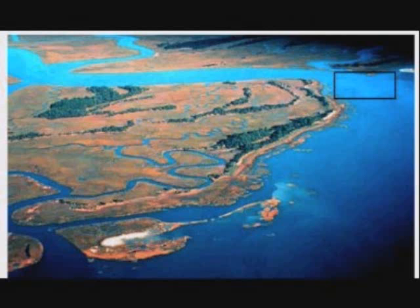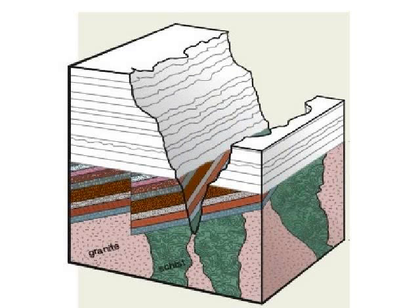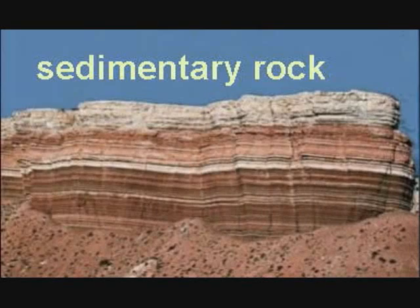In this river delta, you see streams and rivers carrying sand, silt, and rocks to the ocean. As these particles get deposited into layers and are buried, pressure and temperature turn them into sedimentary rock.